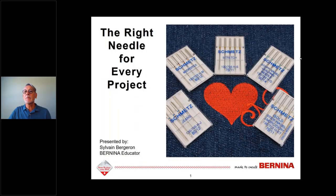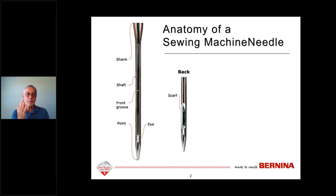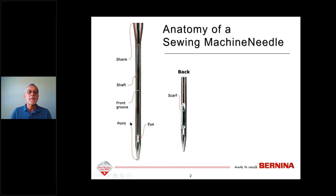So, the anatomy of a needle: you have the shank at the top — that's the flat back for household sewing machines; commercial machines can be round. Then down the front of the needle there's a groove, and the groove is for the thread to slide up and down. At the bottom you'll see the eye, where the thread comes from the front, goes through the eye, and out the back — that's the natural intended orientation for sewing.